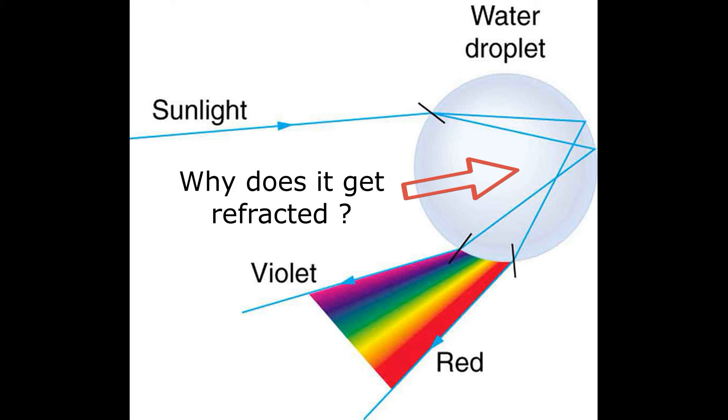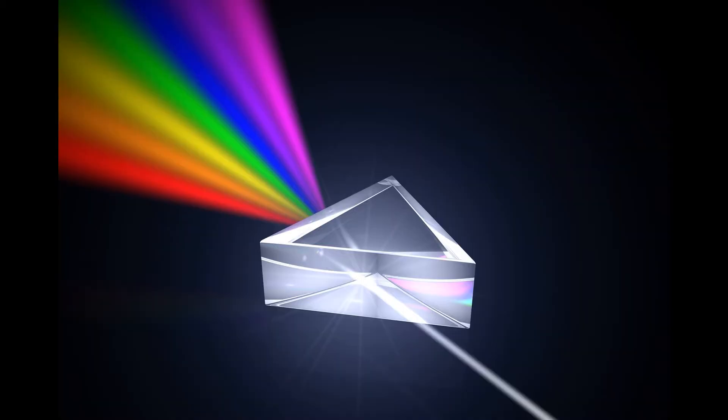You might be wondering that why does the white light get refracted in the same medium? Because I told you previously that the water droplets acts as small prisms and prisms do not further refract light. The white light passes through the prism.